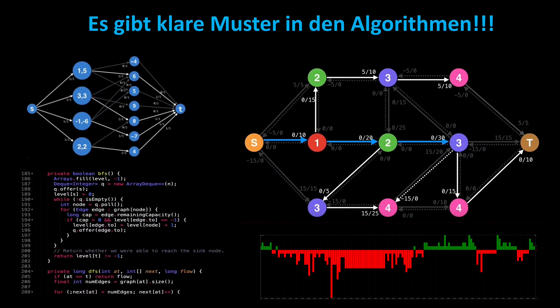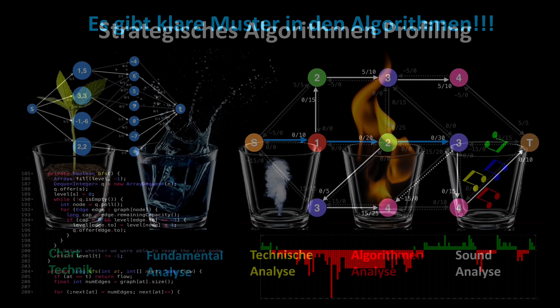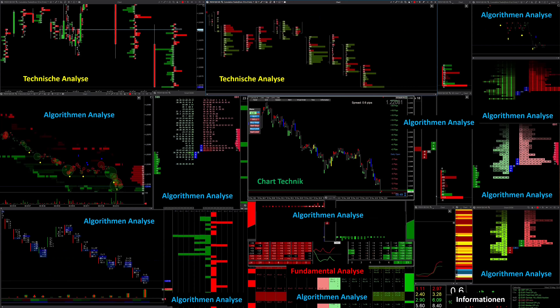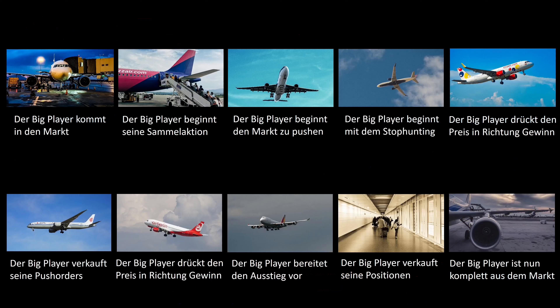This is not a holy grail either, but it often brings a clear market advantage above average. Now you just have to combine these things with each other in such a way that a clear map emerges that shows the retailer where the market is currently. This enables you to react before the small breakouts. You can also find a good example of this in my video 'Reasons for Trading Algorithms'.